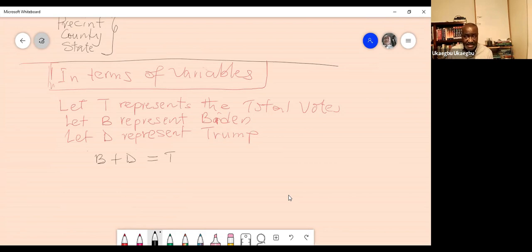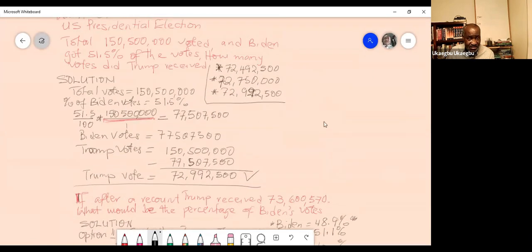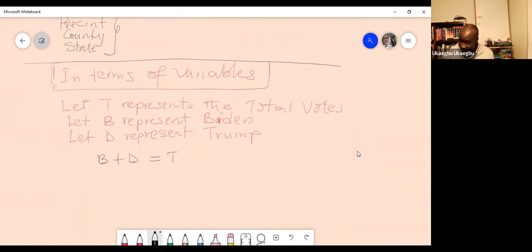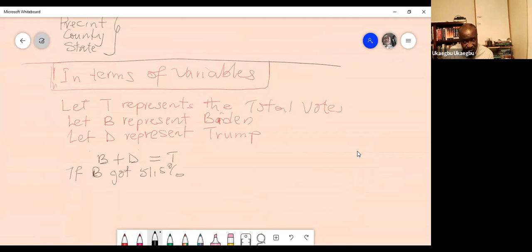Now remember that they said that Biden got 51.5 percent. So let's write this equation in terms of the number that Biden received. If B got 51.5 percent, this is going to be 51.5 divided by 100 multiplied by the actual vote, which is B. So this will be 0.515B. That's what 51 percent represents.